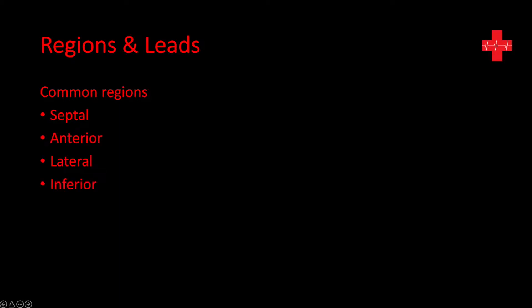The different regions and leads. The most common ones spoken about are septal, anterior, lateral, and the inferior region of the heart — those are the four key areas. The posterior region is also commonly mentioned; however, to identify a posterior MI you need to move leads around and use that information to identify whether it is a posterior AMI. So we're only going to focus on septal, anterior, lateral, and inferior today.